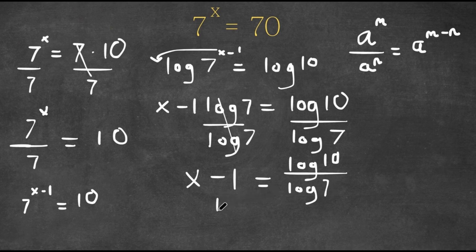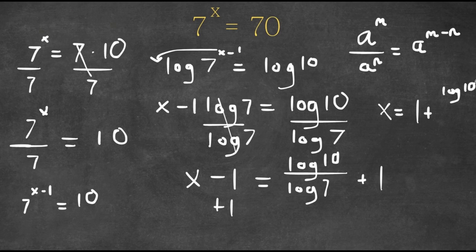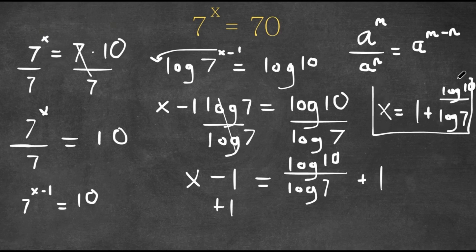So these two cancel out and I get x minus one is equal to log 10 over log 7. Now if I add 1 on both sides, I get x is equal to 1 plus log 10 over log 7. So this is our answer.